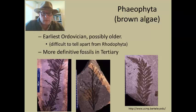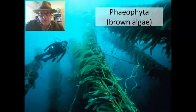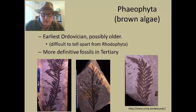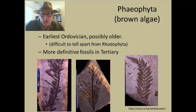The fossil record of brown algae — the earliest record goes back to the earliest Ediacaran, possibly older, but it's a little difficult to tell these apart from the Rhodophyta, which have a more extensive fossil record. Some of these earlier forms are problematic in determining whether they actually belong within the brown algae group. Once you get into the Tertiary, in the last 65 million years, you have a much better fossil record of kelp beds, particularly along the Pacific coast of North America.